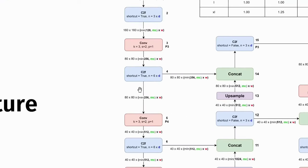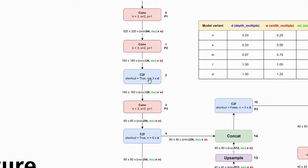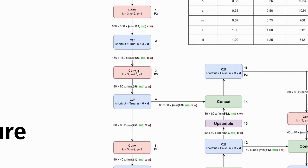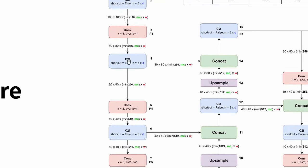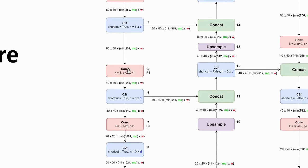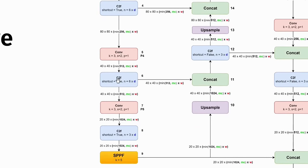Next is the C2F block. This block contains two parameters: shortcut and N. The shortcut parameter is true, indicating that the shortcut will be used on the bottleneck block, whereas N determines how many bottleneck blocks are used. The N value is calculated by multiplying the depth multiple value by 3. Following that, there is another convolutional block with kernel size 3, stride 2, and padding 1. The next C2F block has shortcut true and N equal to 6 multiplied by the depth multiple. This is followed by more convolutional blocks with kernel size 3, stride 2, and padding 1, and another C2F block with shortcut true and N equal to 3 multiplied by the depth multiple.